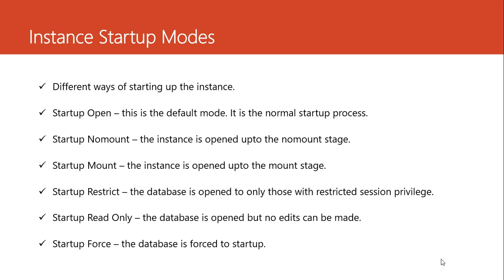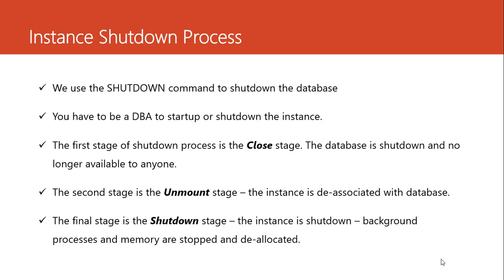Just like the startup process, we also go through a process when shutting down the instance. To shut down the database, you again have to be a DBA and connect as an administrator. We begin with the shutdown command — the off switch for the instance. The first stage of the shutdown process is the close stage, where all database files are closed and no longer accessible to users. The database is closed and no longer available to anyone.